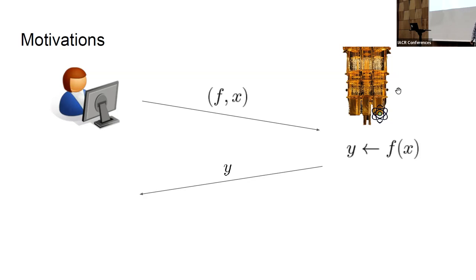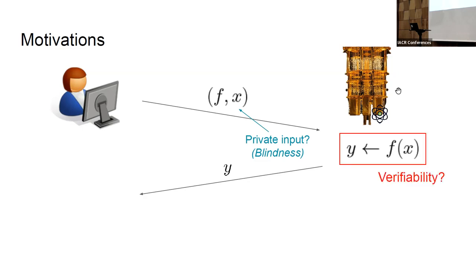As crypto researchers, we see a couple of things wrong with this picture. The first issue is that you are suddenly sending all of your input data to a cloud server, and who knows what the server is going to be doing with your data. So the first thing we want is a private input — we want the blindness property where the server learns nothing.